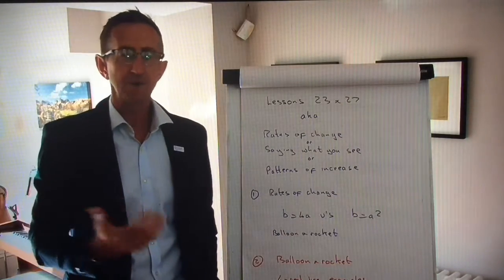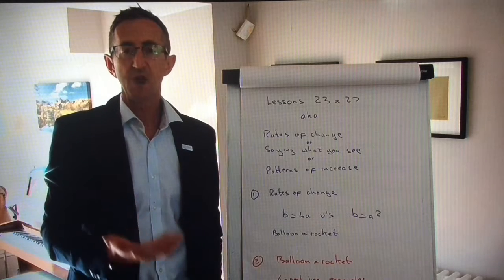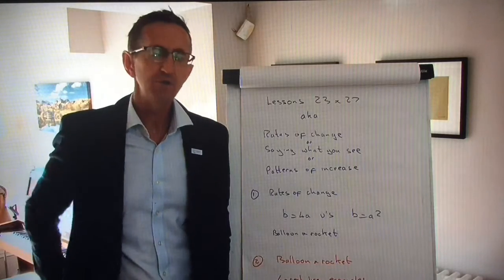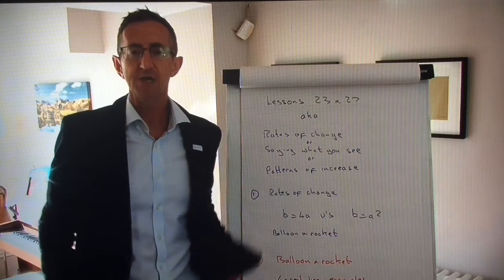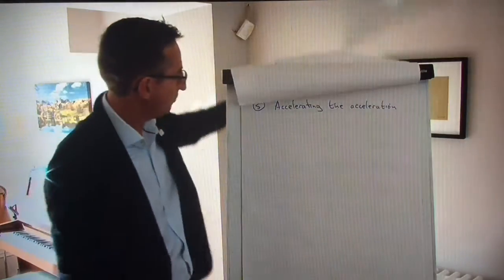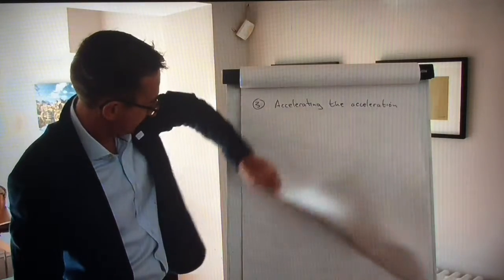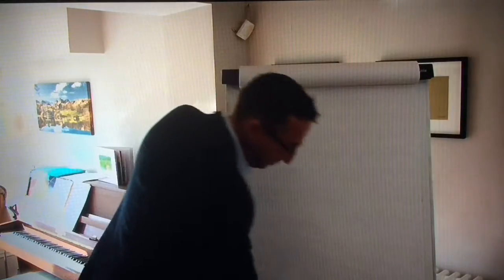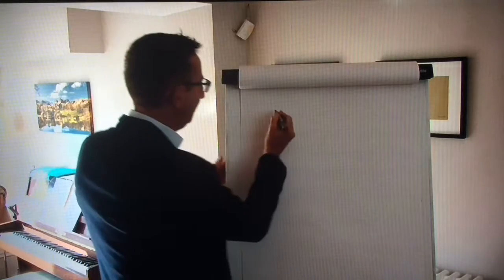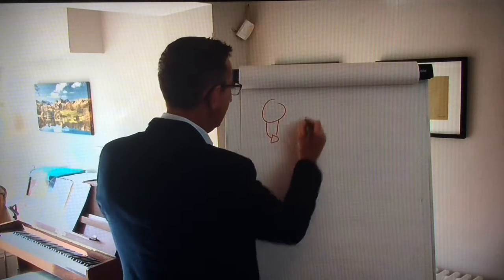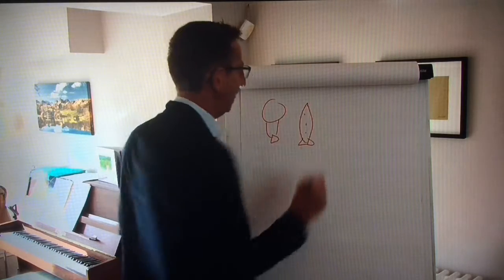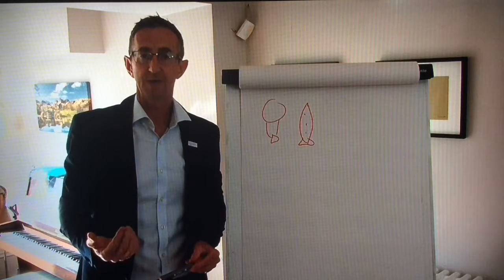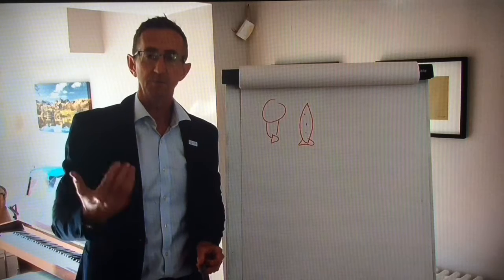The balloon and rocket activity is very, very interesting — you can see it on the PowerPoint. The scenario is: there's a fair in the summer, a lovely sunny day, no wind, and there are two rides you can go on — a balloon ride and a rocket ride. I would draw a little picture of a balloon and a rocket. I'm going to show a picture of what a graph of how they rise through the air looks like. How ambiguous you want to be is up to you, but it really, really works.